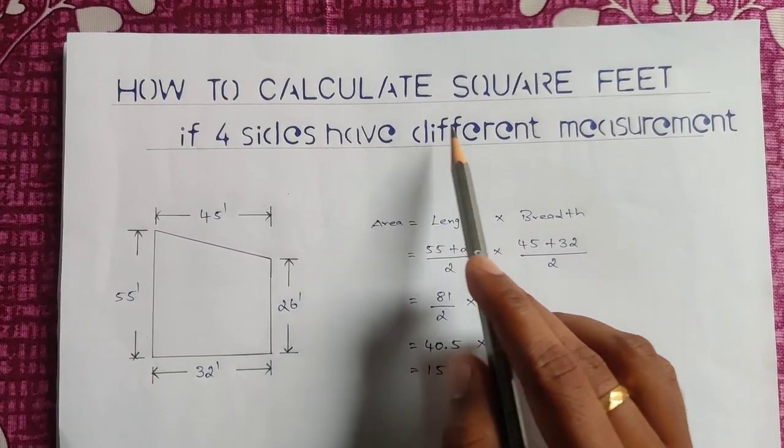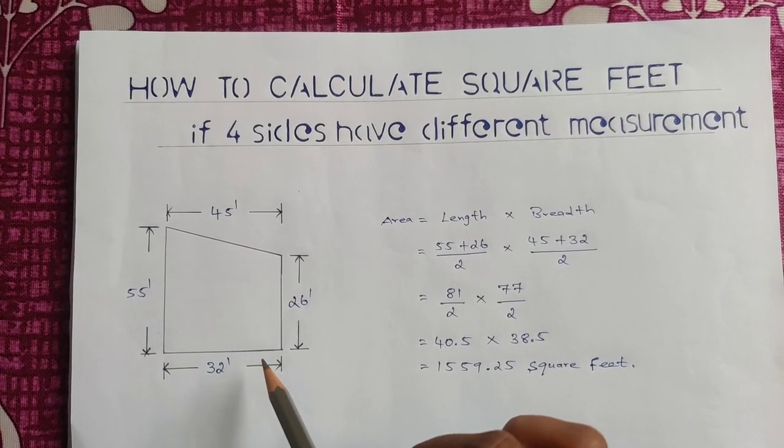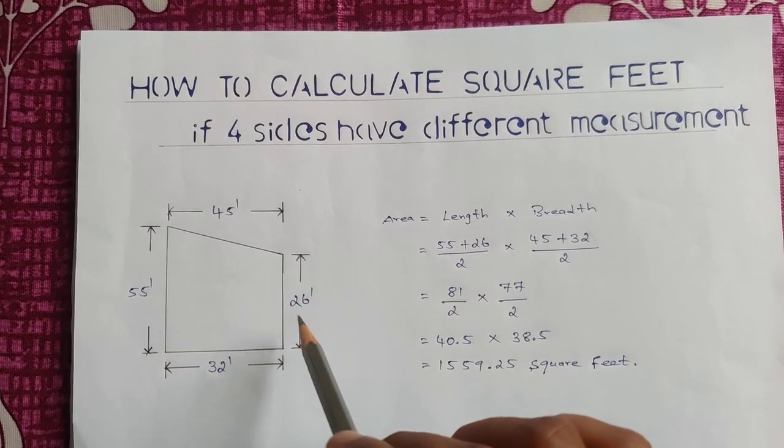Simple. The square feet are like four sides. We will see four measurements. Four sides with different measurements.